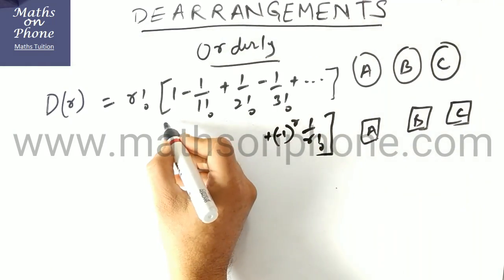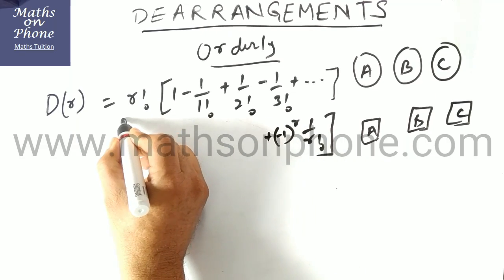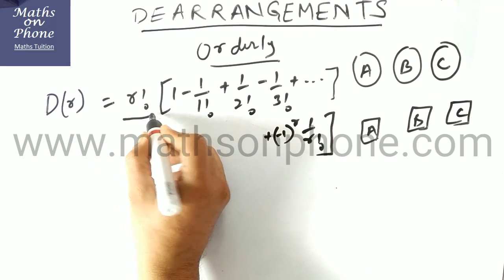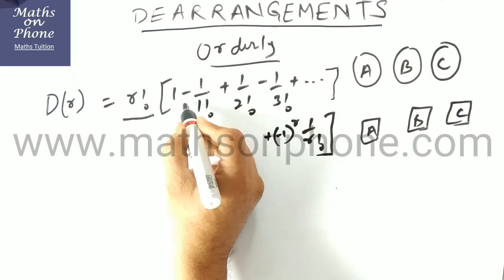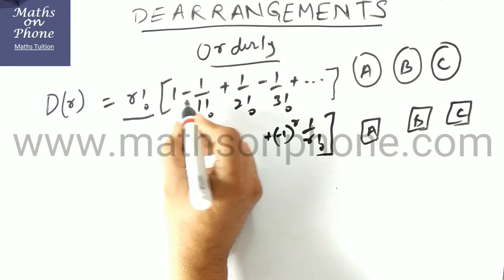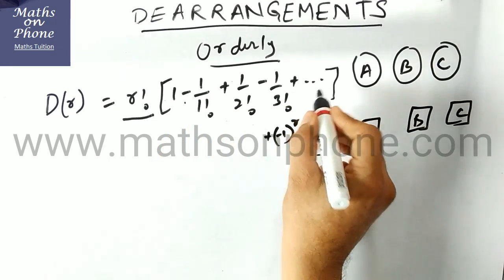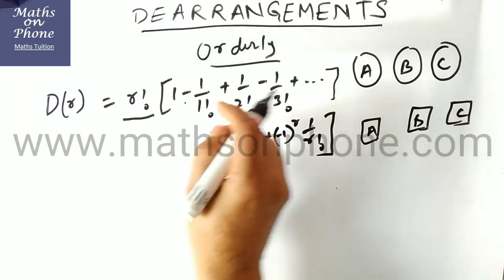So what is the pattern you see here. The things we have to dearrange, 1 minus, alternatively we have to put the sign: minus, plus, minus, plus. And where do we have to stop?